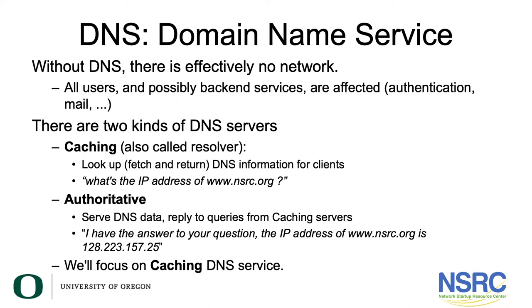There are two kinds of DNS servers. The caching server, also called the resolver, looks up, fetches, and returns DNS information for clients — for example, what's the IP address of www.nsrc.org. The other kind is the authoritative server, which serves DNS data and replies to queries from caching servers — for example, the IP address of www.nsrc.org is 128.223.157.25. We are going to focus on the caching DNS servers.